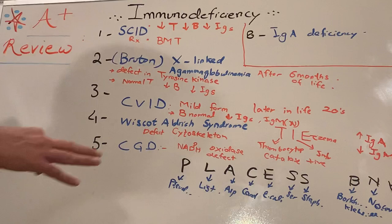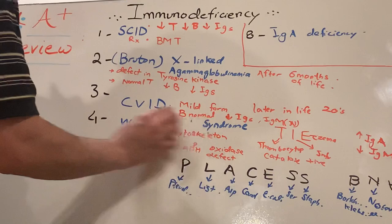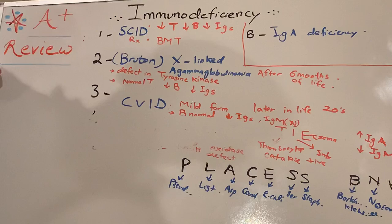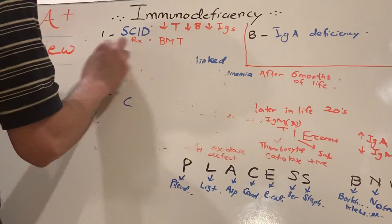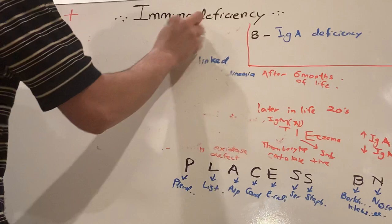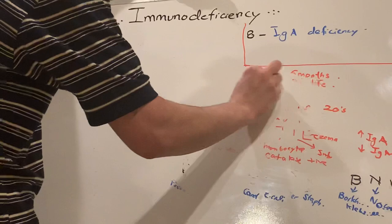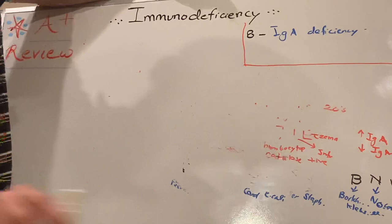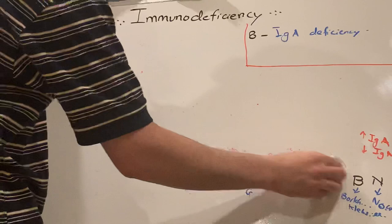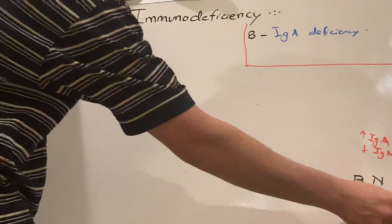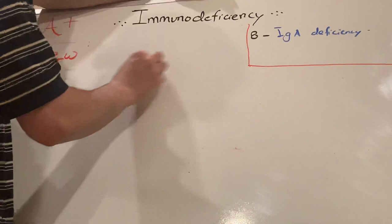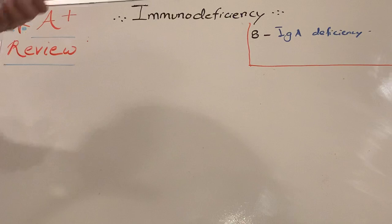So far we discussed SCID, Bruton, Common Variable, Wiskott-Aldrich, CGD. So since we just talked about CGD, in a nutshell what happens is with the defect in NADPH oxidase you have impotent macrophages. The respiratory burst, the reactive oxygen, you're not forming that hydrogen peroxide. And catalase is what breaks down hydrogen peroxide, so that's why you have increased susceptibility to catalase positive organisms. The common test they like to see is an abnormal Dihydrorhodamine test where you have absent green fluorescence.